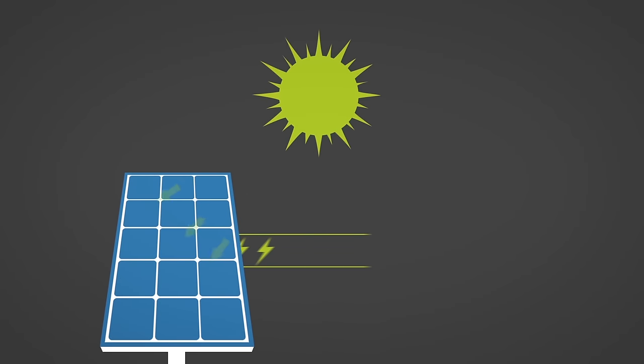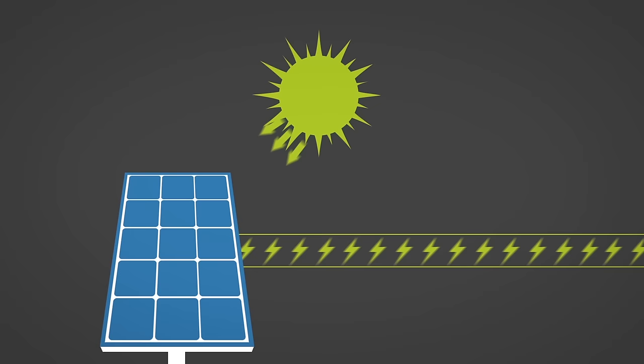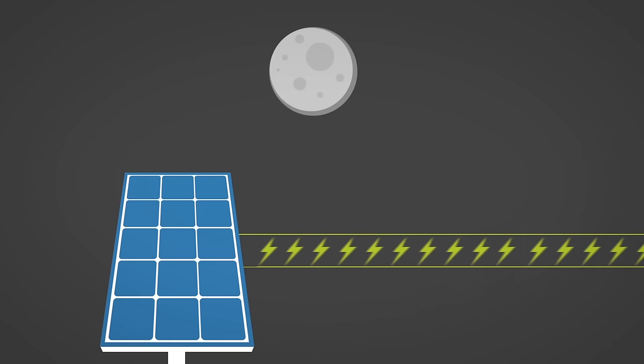Unlike solar thermal technologies, solar PV can only use direct sunlight, which means when the sun doesn't shine, electricity isn't produced.